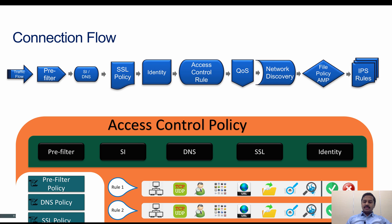Based on the rule verdict, if the action is drop, the traffic is dropped at the access control level. If it is permit or allowed, the traffic continues to move on to the next component, which is quality of service, where rate limiting is applied based on rule matching.